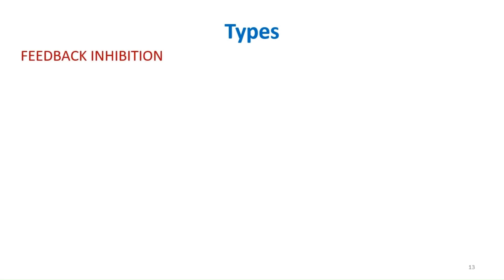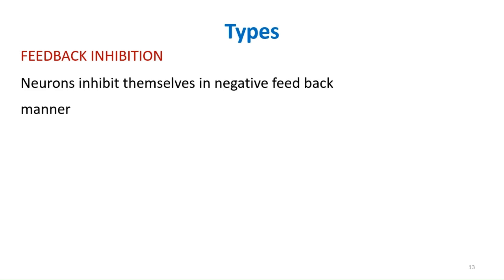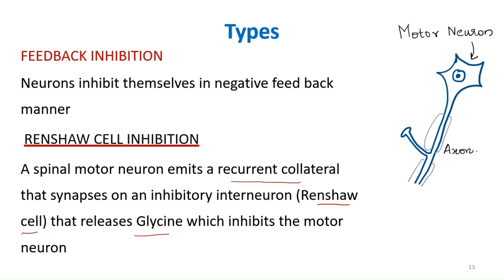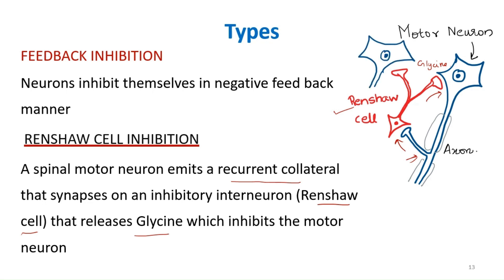The next type is feedback inhibition, where neurons inhibit themselves in a negative feedback manner. The best example is Renshaw cell inhibition. A spinal motor neuron emits a recurrent collateral that synapses on an inhibitory interneuron called the Renshaw cell, which releases glycine to inhibit the parent motor neuron. The Renshaw cell inhibits not only the parent motor neuron but also other motor neurons. This is feedback inhibition.